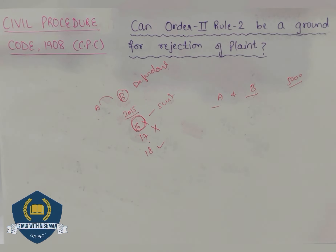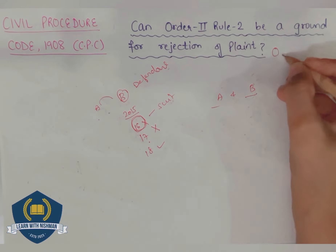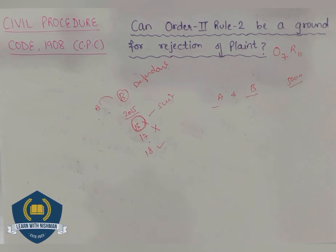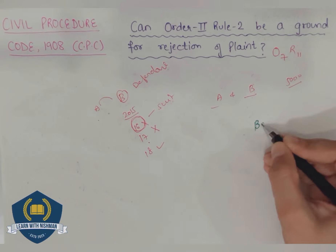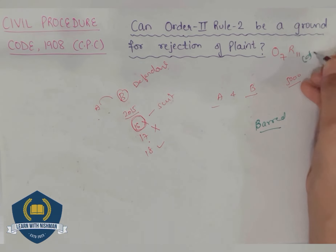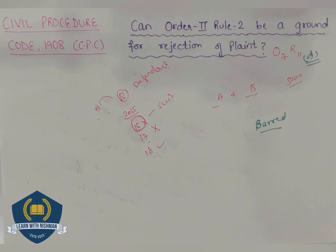Now let's see the answer to the question: Can Order 2 Rule 2 be a ground for rejection of claim? Rejection of plaint is covered under Order 7 Rule 11. Order 2 Rule 2 means it is a bar of law — the second suit is barred. Order 7 Rule 11 relates to rejection of plaint, and it says that if it appears from the pleadings of the plaint that the suit is barred by law, then the plaint shall be rejected.